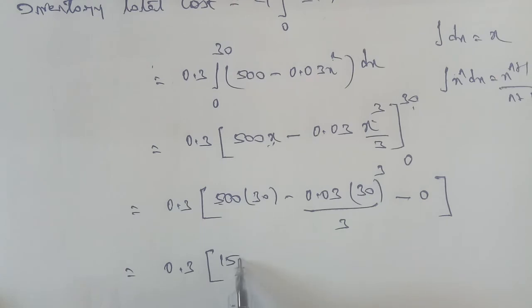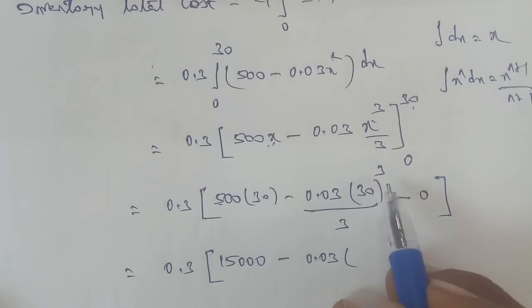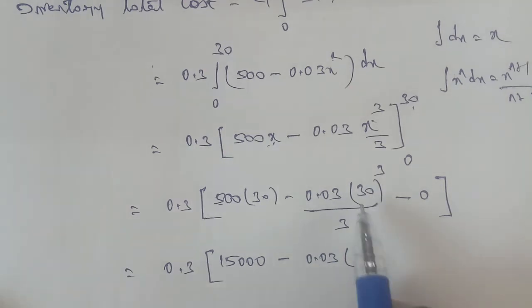500 × 30, here in the numerator 3 divides into 15, so minus 0.03. 30 cubed is 27,000, and 30 × 3 in the denominator.